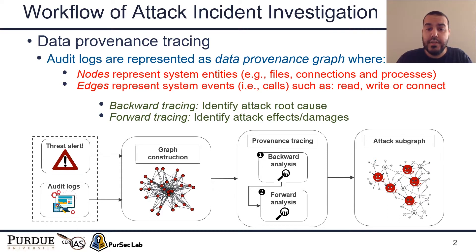Given the constructed graph starting from the threat alert event, a backward tracing analysis traverses the graph backward to identify potential attack routes, and the forward tracing analysis traverses the graph starting from the identified attack routes to identify the potential attack damages. Finally, the attack investigation result is reported as a subgraph that summarizes the attack.